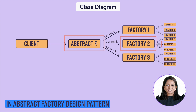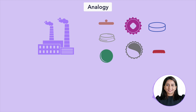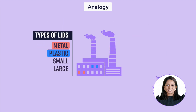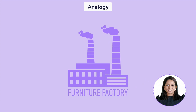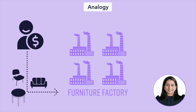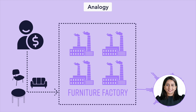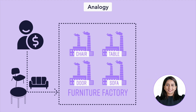Let's understand the abstract factory method pattern using an analogy. Just like in the previous example we discussed a factory that produces lids — where different sections produce different lids but the client has no idea how they are produced — similarly, let's say there is a huge furniture factory which is a collection of smaller factories. The client places an order for a chair, sofa, or table. The abstract factory provides a common interface for placing a furniture order, and internally, depending on the order, it routes to the respective specialized factory for that furniture to be manufactured and returned to the client. This is a factory of factories.